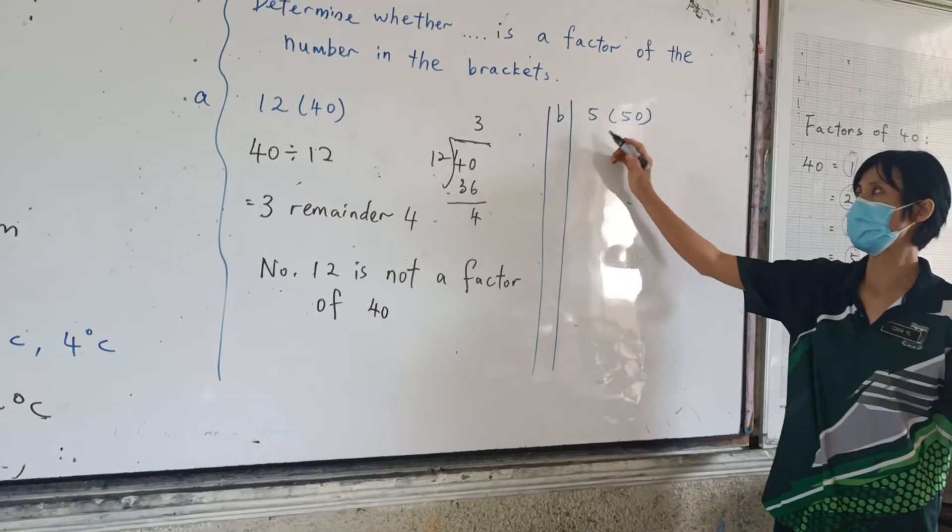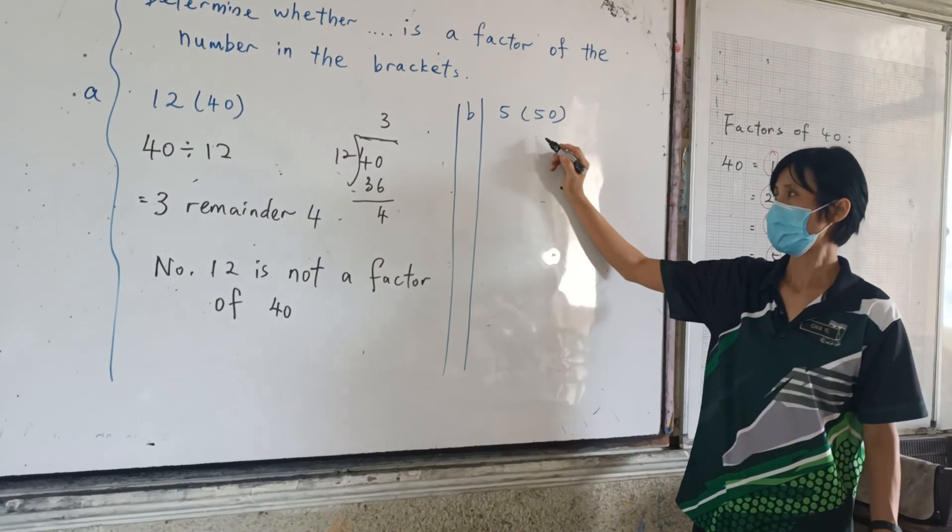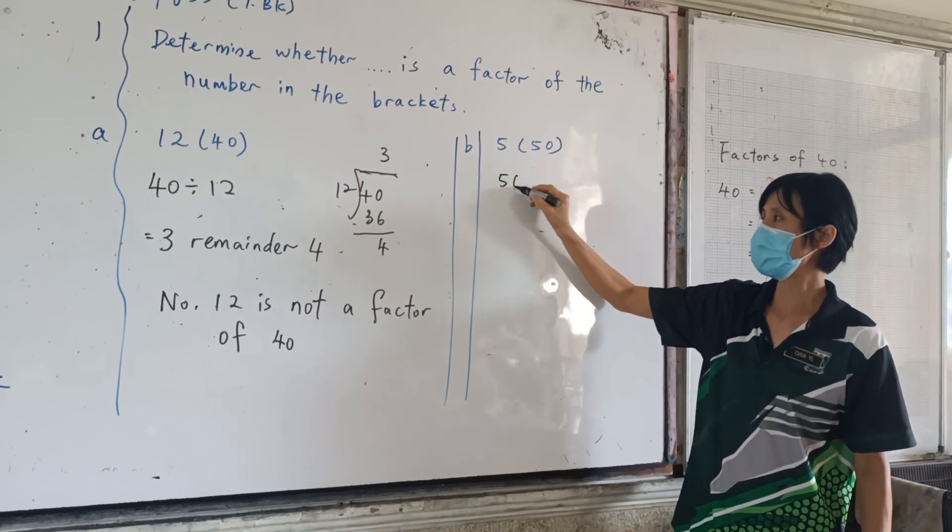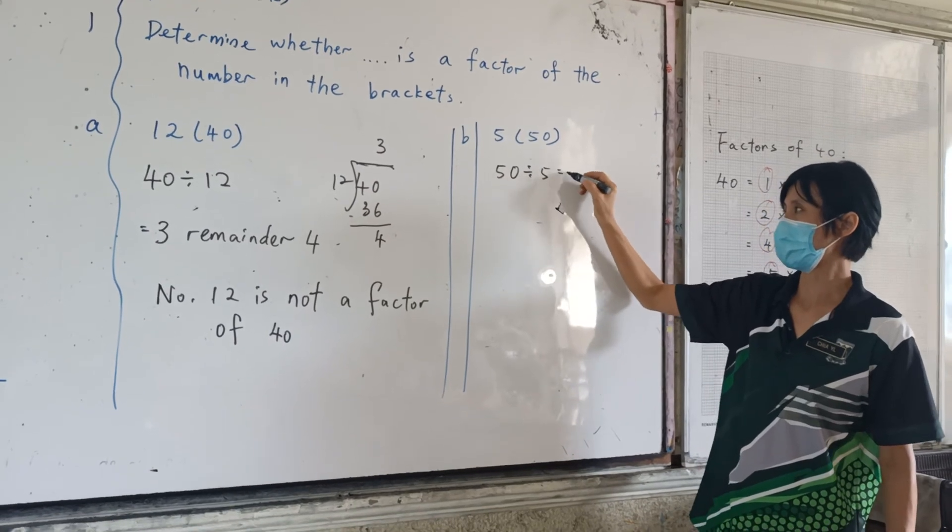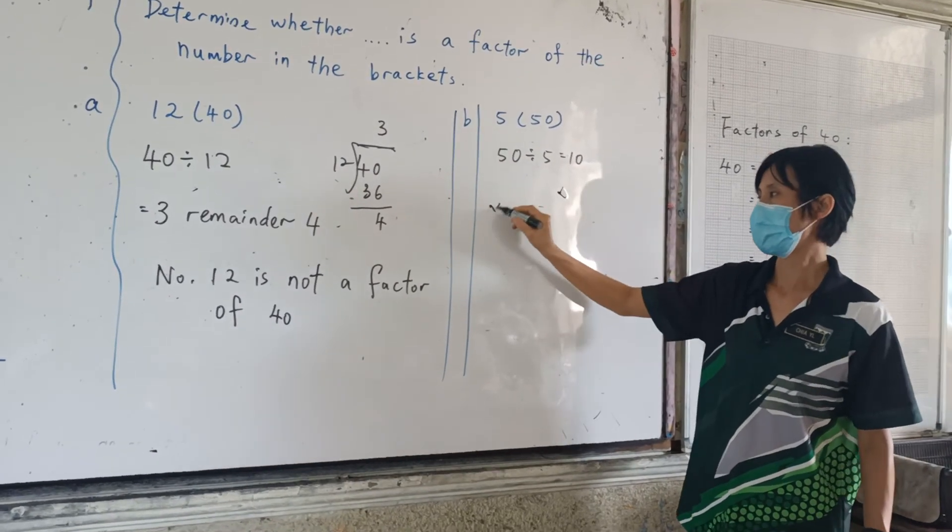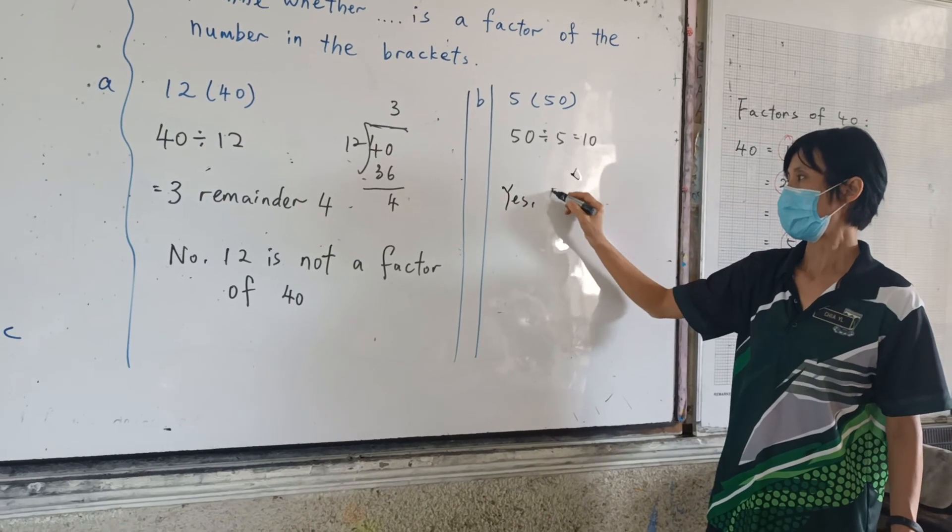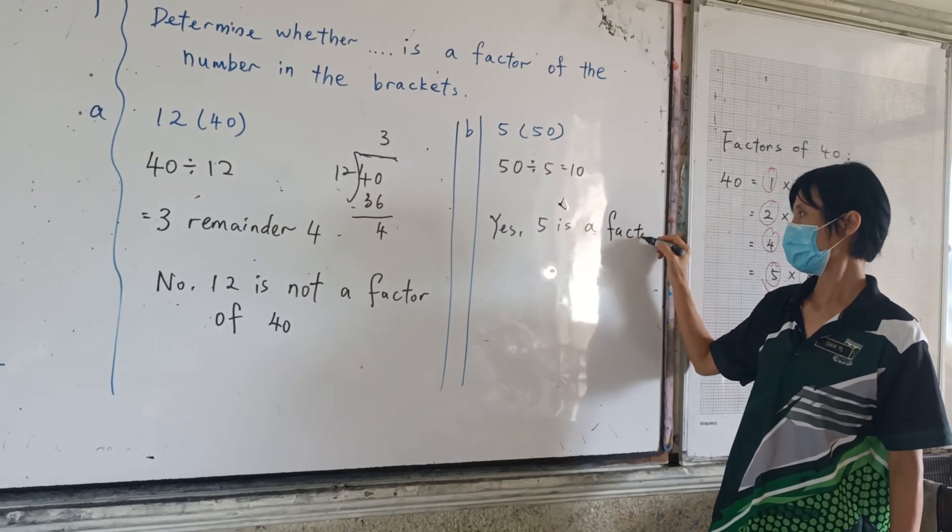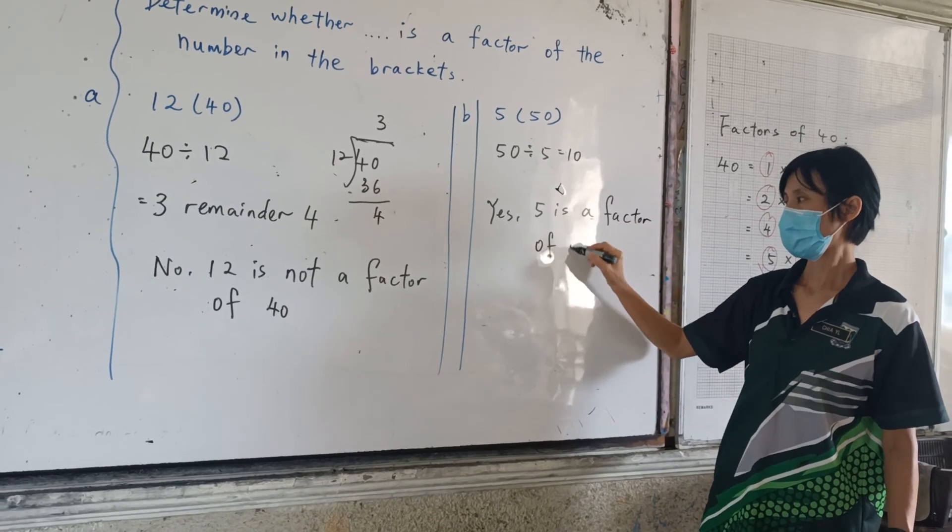The following question asks you whether 5 is a factor of 50. So what should you do? Tell me. 50 divided by 5. 5, you get 10. Yes, 5 is a factor of 50.